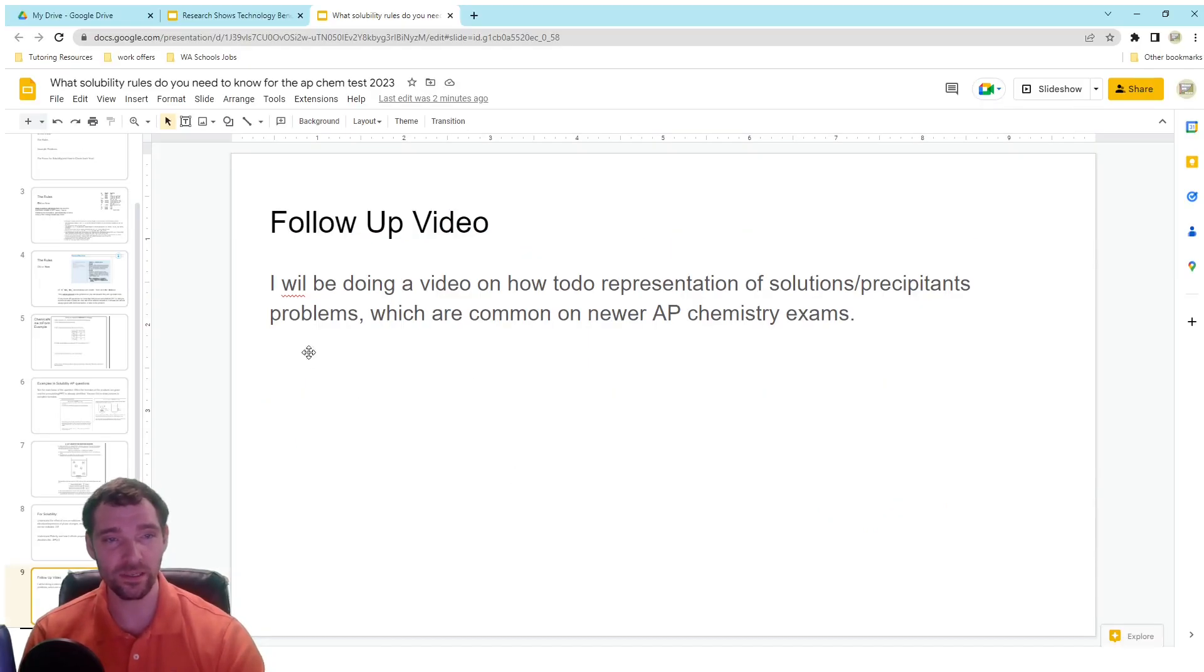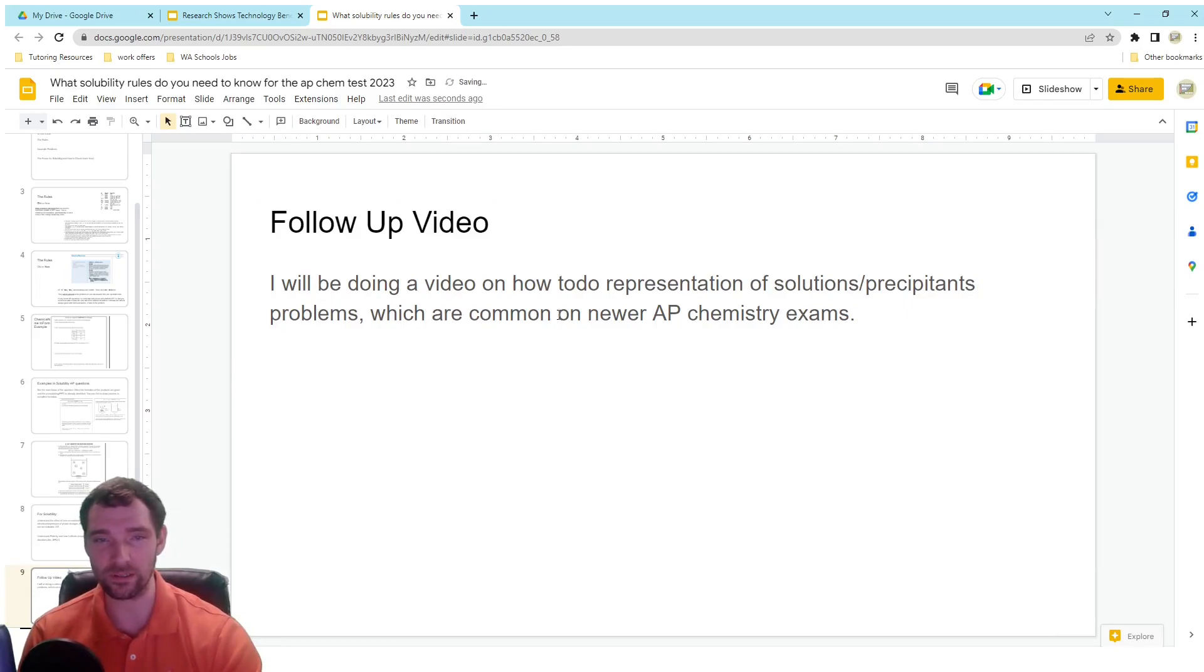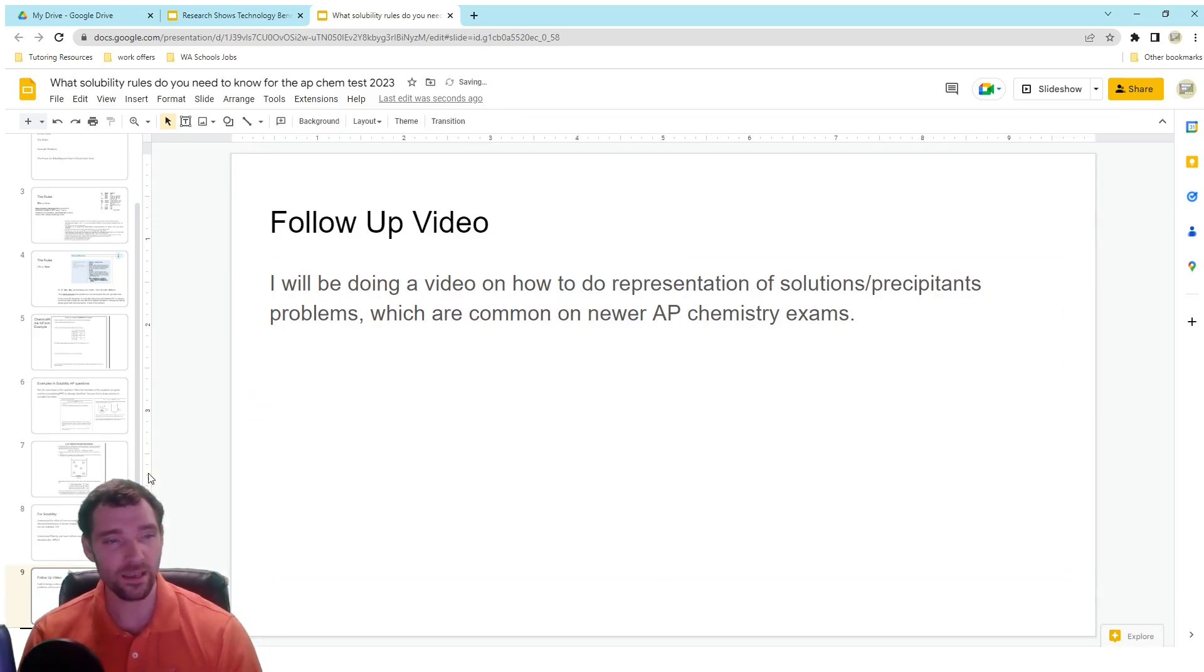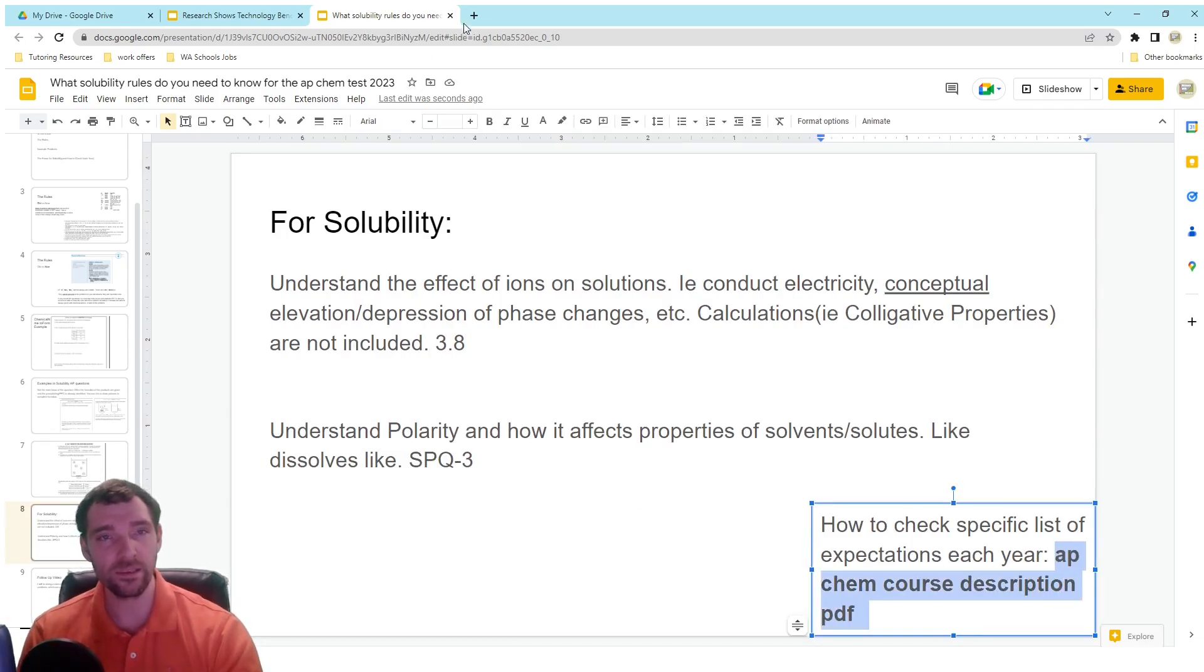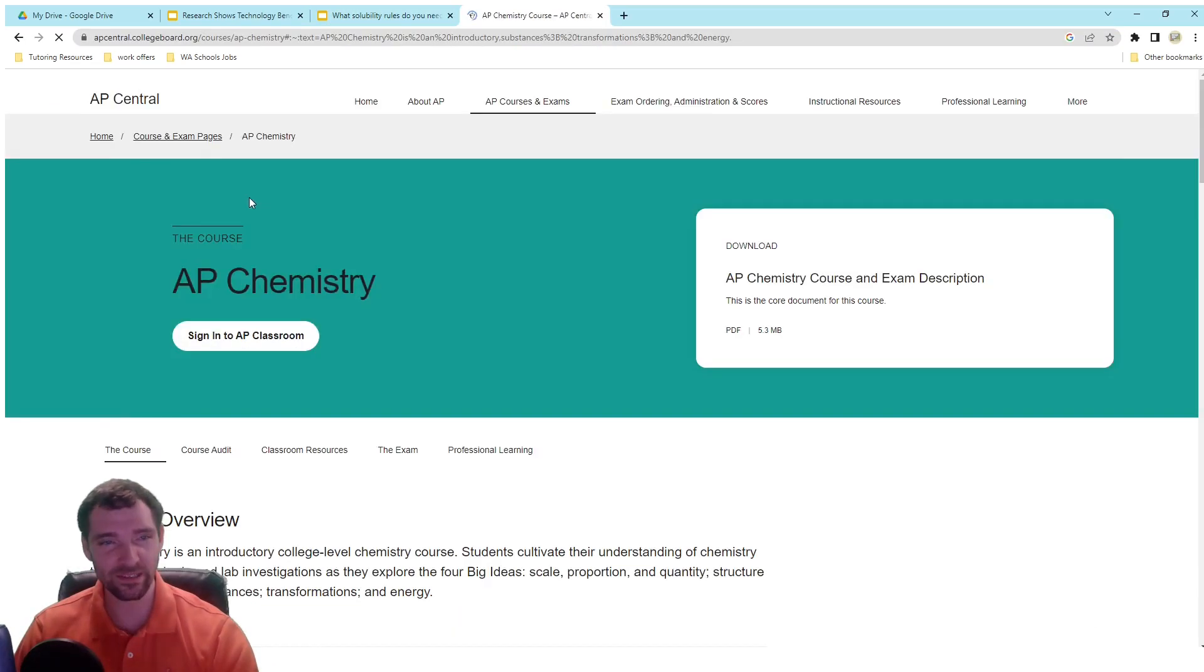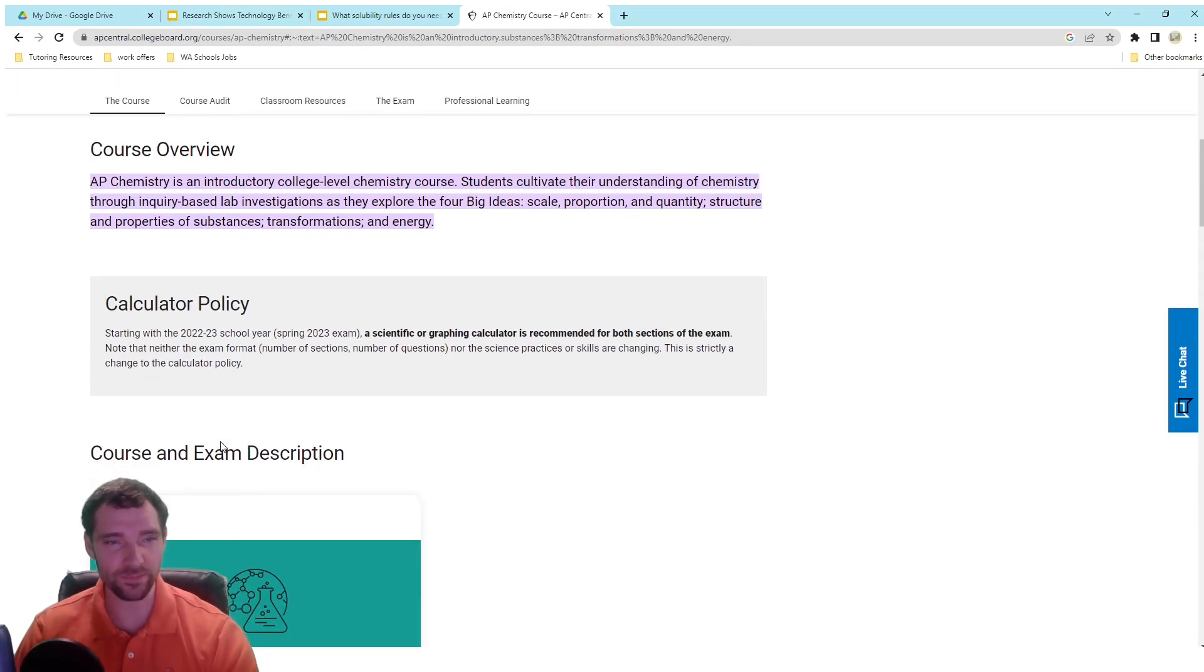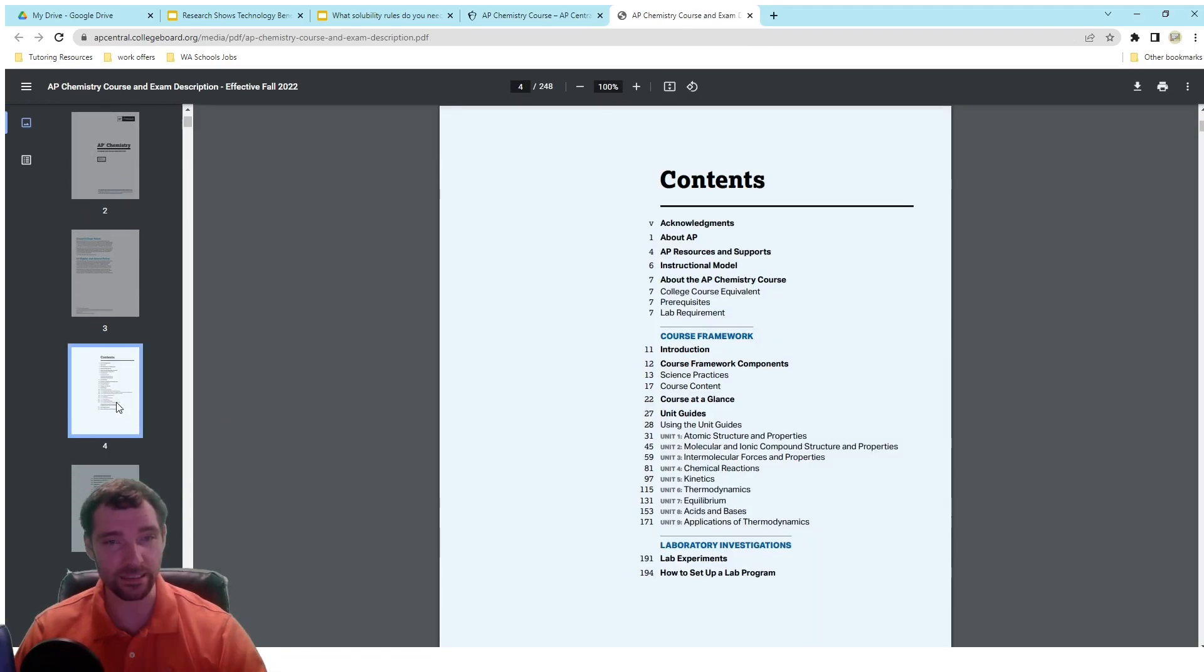If you just Google AP Chem course description PDF, you should be able to find this. I'm going to do that really quick. I also wanted to say I'm going to be doing a follow-up video on how to do these representation of solution problems because they're very common on the AP test. If we just Google this, actually you need to just Google course description to get the correct link. This will take you to the AP Central College Board website, and they have a link to a PDF.